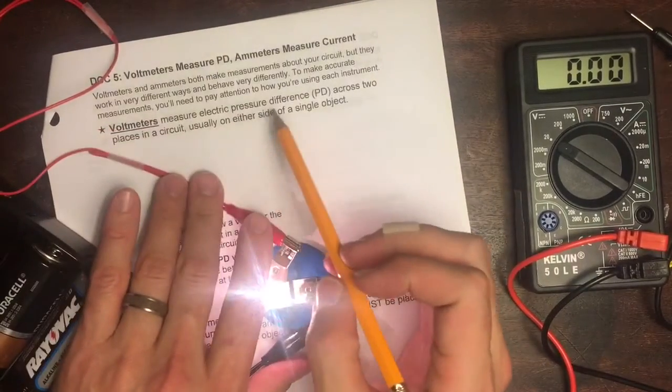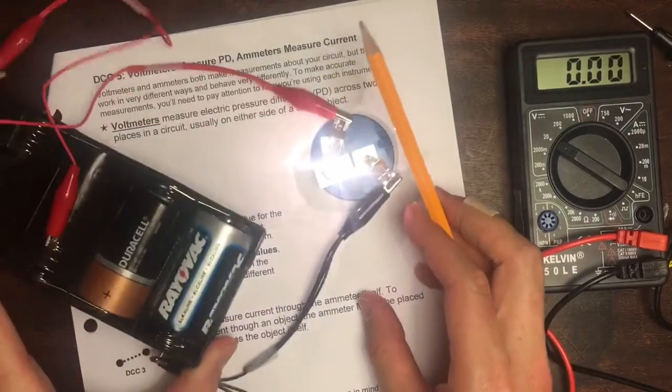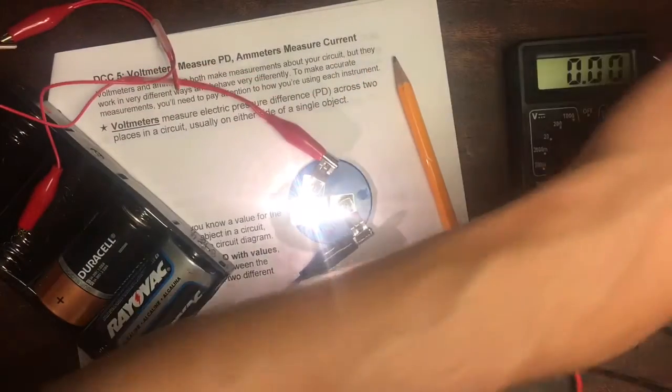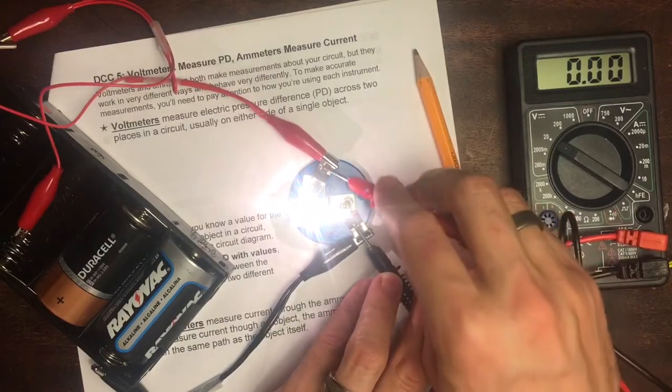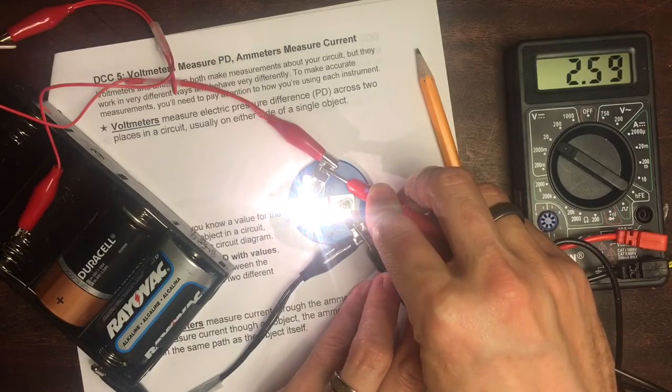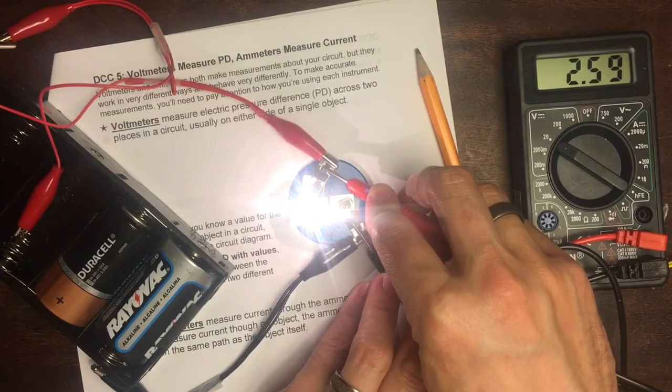Voltmeters measure electric pressure difference across two places in the circuit, usually on either side of a single object. So we can see this bulb's lit up. If we take our voltmeter and put one lead on one side of the bulb and the other lead on the other side of the bulb, we read about 2.6 volts across that bulb.